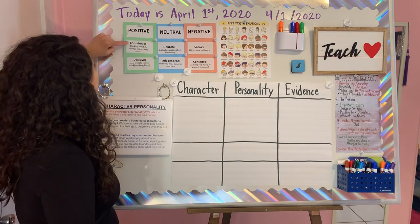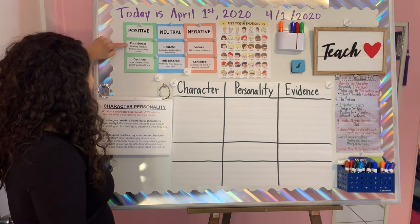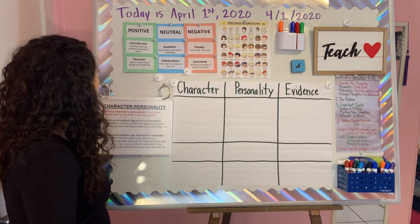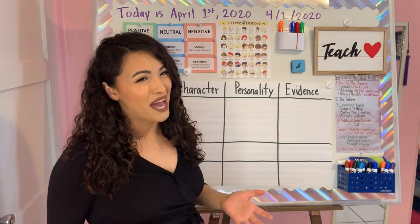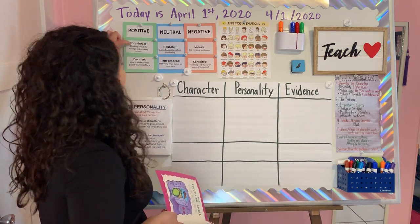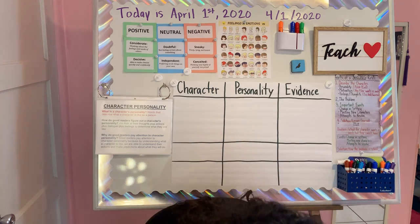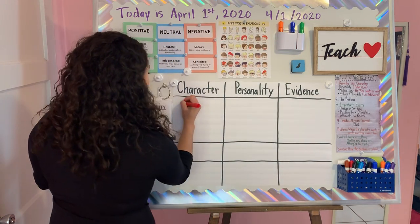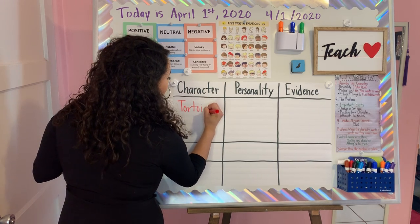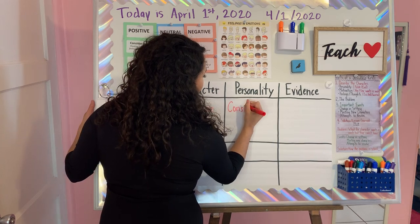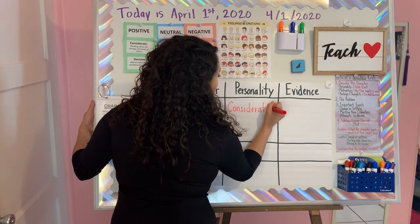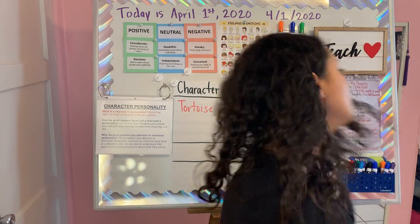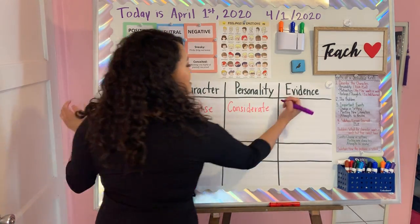I see the word considerate and decisive. Considerate means thinking about the feelings and needs of others — that's definitely Tortoise. Decisive means able to make choices quickly and confidently — I don't think that's the best choice. I think considerate better describes Tortoise. So I am going to write that down on my chart. He is considerate, and I know from my evidence because he is thinking about Vulture's feelings — that is his thoughts.